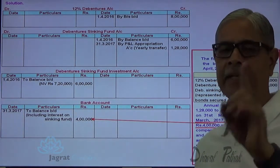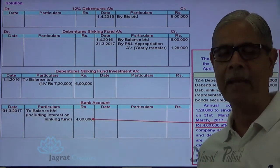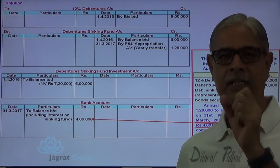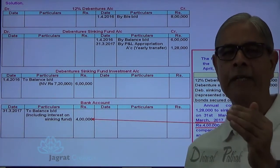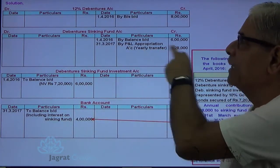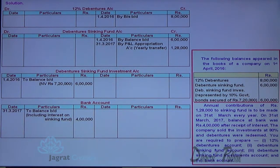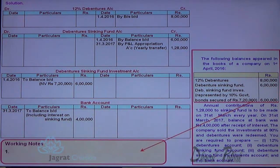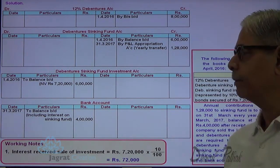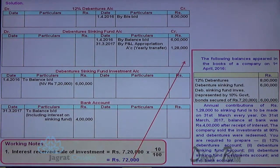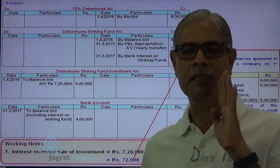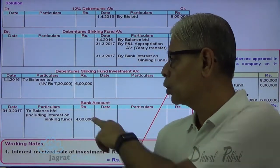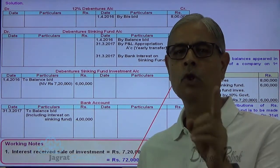On this sinking fund investment, the interest is received. The interest is already recorded in bank account. Generally, the journal entry for the interest received on sinking fund investment is bank account debit, to sinking fund account credit. But the bank balance already includes the interest received, so only sinking fund account will be credited with the interest. How much is the interest? 7,20,000 into 10% equals 72,000. Bank account is already debited with this interest, so 72,000 will be credited to sinking fund account. This 4 lakhs includes this 72,000, so no need to debit it once again.